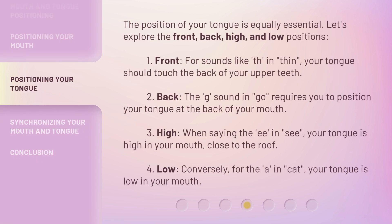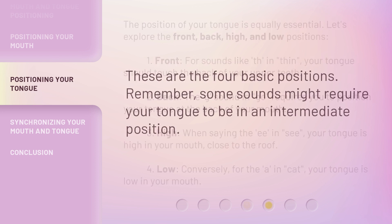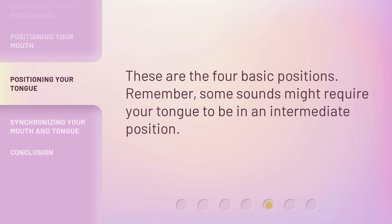The position of your tongue is equally essential. Let's explore the front, back, high, and low positions. 1. Front: For sounds like TH in 'Thin,' your tongue should touch the back of your upper teeth. 2. Back: The G sound in 'Go' requires you to position your tongue at the back of your mouth. 3. High: When saying the EE in 'C,' your tongue is high in your mouth, close to the roof. 4. Low: Conversely, for the A in 'Cat,' your tongue is low in your mouth. These are the four basic positions. Remember, some sounds might require your tongue to be in an intermediate position.